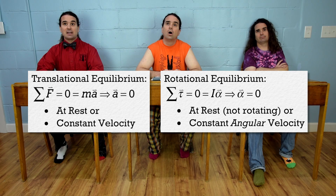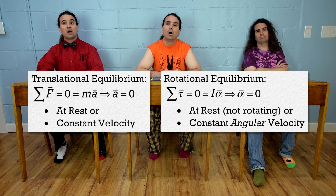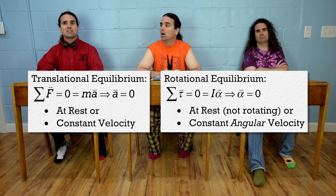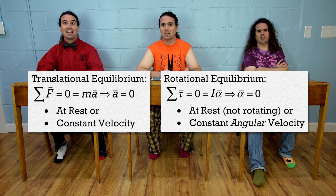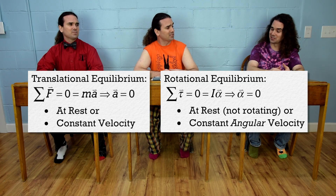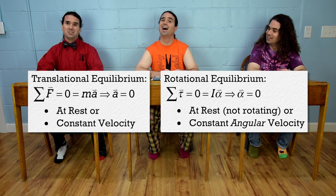When the net torque acting on an object equals zero, the angular acceleration of the object equals zero. Angular acceleration equals change in angular velocity over change in time. Therefore, if the angular acceleration of the object equals zero, that means the angular velocity of the object is not changing. Therefore, the object is either not rotating or moving with a constant angular velocity.